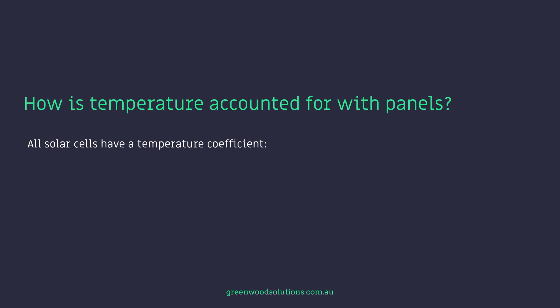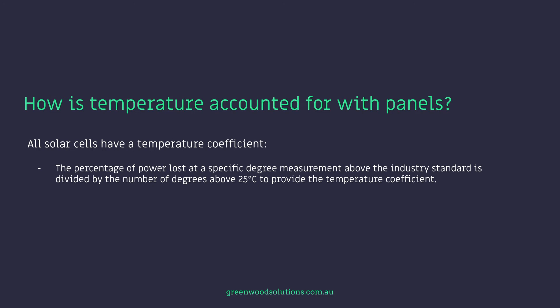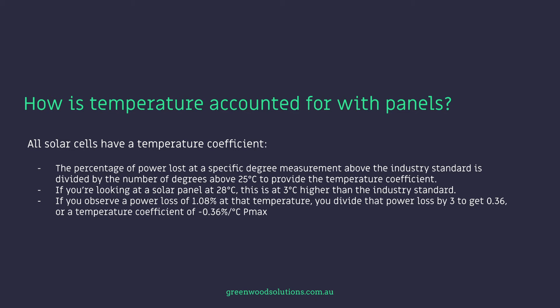All solar cells have a temperature coefficient. The percentage of power lost at a specific degree measurement above the industry standard is divided by the number of degrees above 25°C to provide the temperature coefficient. For example, if you're looking at a solar panel at 28°C — that's three degrees higher than the industry standard — and you observe a power loss of 1.08% at that temperature, you divide that power loss by three degrees to get 0.36, giving a temperature coefficient of negative 0.36% per degree centigrade.